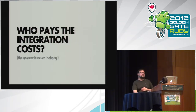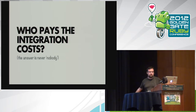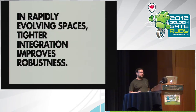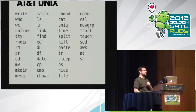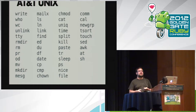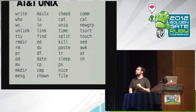The question I would have you ask about all this is: who pays the integration cost? And the answer is never nobody — they're never free. You build a standard and it's not free. Hopefully in a good world the integration costs are spread out across a lot of users. But the short version of what I'm saying is: in rapidly evolving spaces, tighter integration improves robustness. That is a contrast to 'everything should be standardized.'